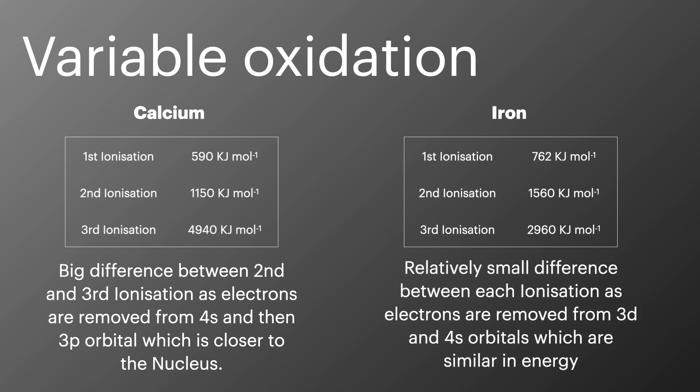In comparison there's no big jump in the ionization energies for iron. This is because the electrons are removed from the 3d and the 4s orbitals and these are very similar in energy.